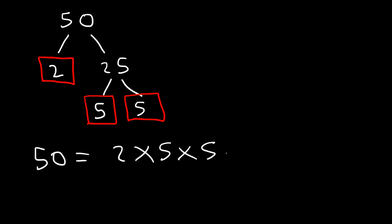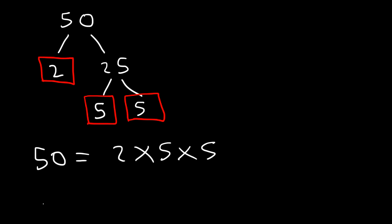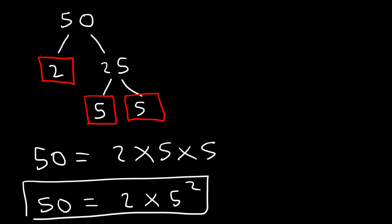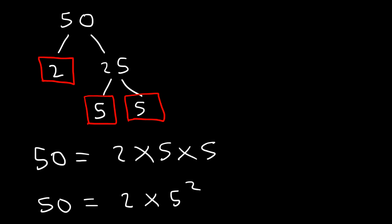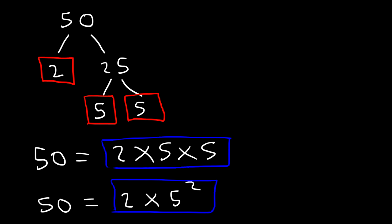Sometimes you may be asked to write the prime factorization using exponents. Since we have two 5s, we can write it as 5 squared. So you can express the prime factorization of 50 as 2 times 5 squared. You can leave the answer either way — as 2 times 5 times 5, or as 2 times 5 squared.